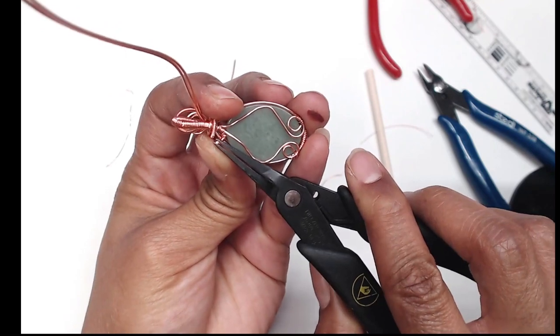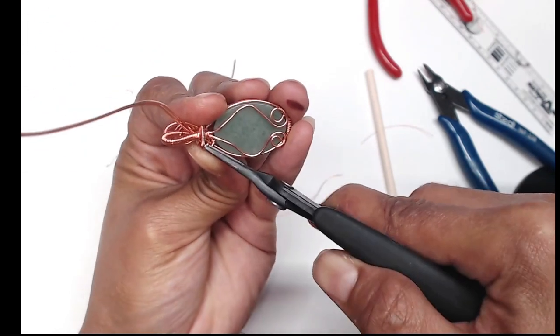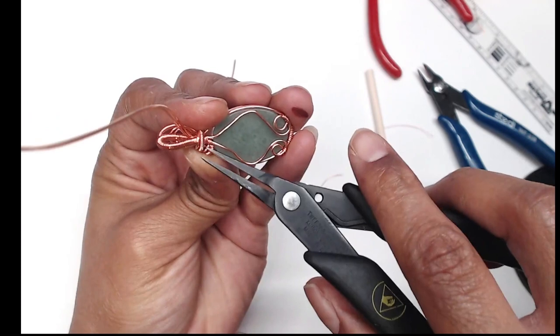So you create a little curl and you guide it into that little hole you have there and you clamp it down.